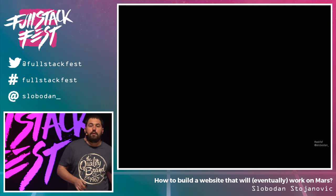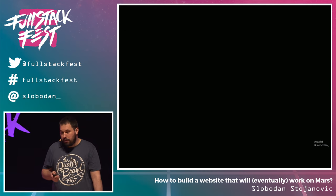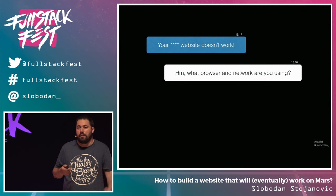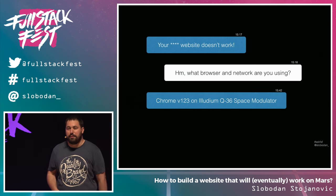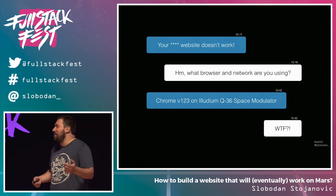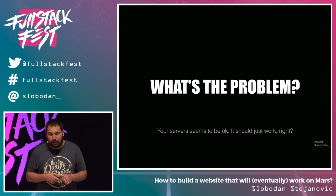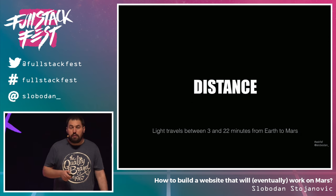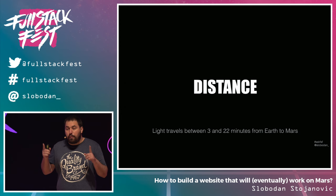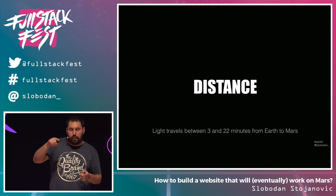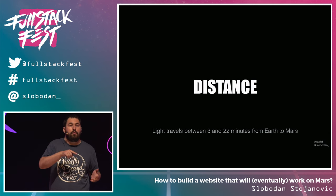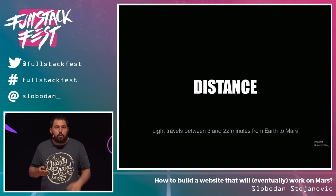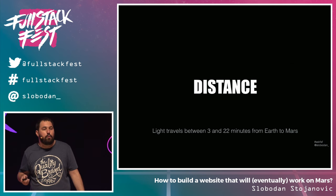So how can the Internet work on Mars at all? Imagine one day you have that website and you receive a bug report, asking for browser info and context. So what's the problem? Why is it not working? The first thing you see is the distance between the planets. In perfect alignment, light needs at least three minutes to travel from Earth to Mars, so a round trip from Earth to Mars will be 6 to 44 minutes. That doesn't work with TCP/IP protocol or anything else.